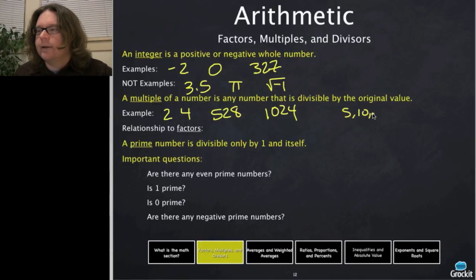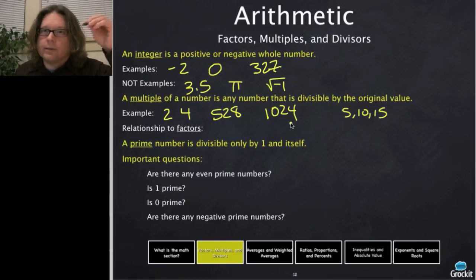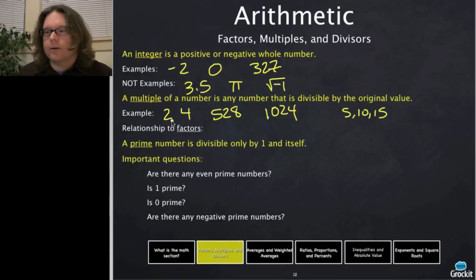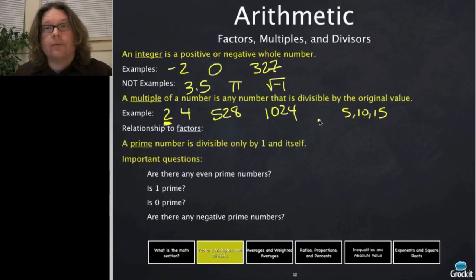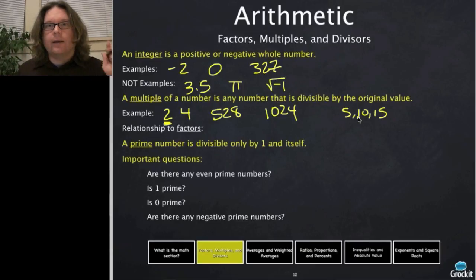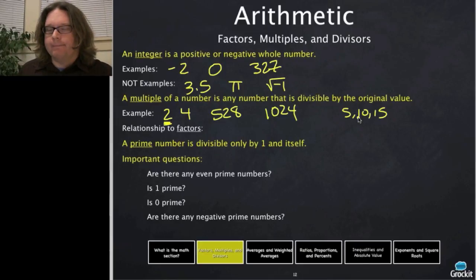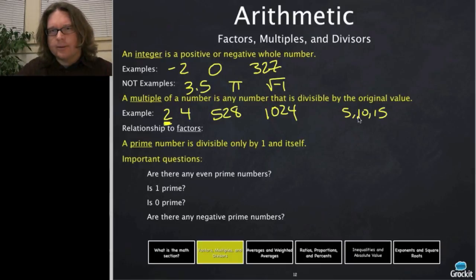The relationship between factors and multiples: factors are the numbers you multiply together to get a multiple. So 2 is a factor of 4, and 5 is a factor of 10; 10 is a multiple of 5. They have a reciprocal relationship. It's important to keep these straight because test questions will distinguish between them — whether you're going up with multiples or down with factors.